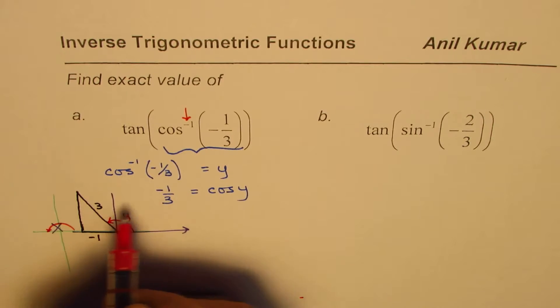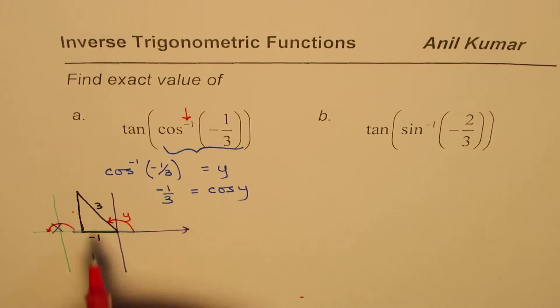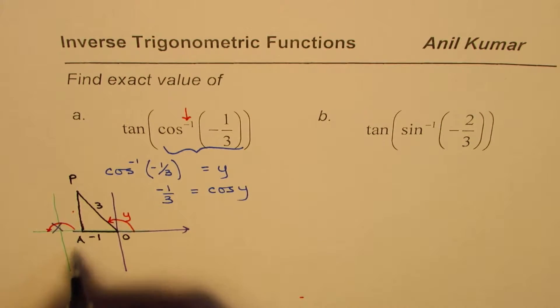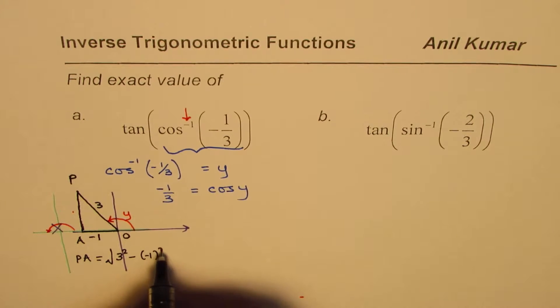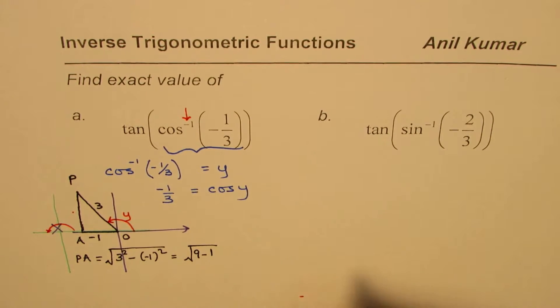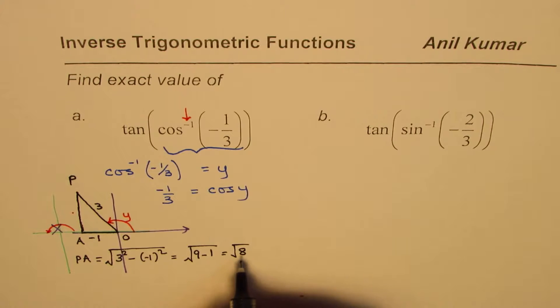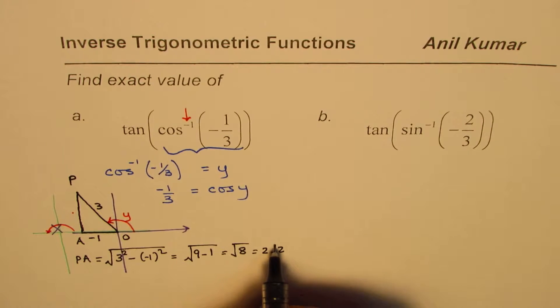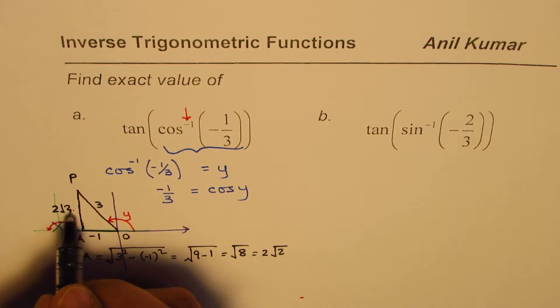So this point here, we have to find this height. Let us say this point is O, this is P, and let's say this is A. Then PA will be equals to square root of (3² - (-1)²), which is square root of (9 - 1), which is square root of 8. Square root of 8 you could write as 2√2. So I'll write this height as 2√2.